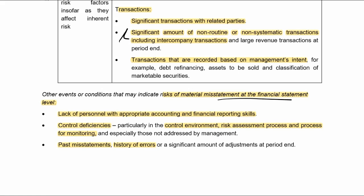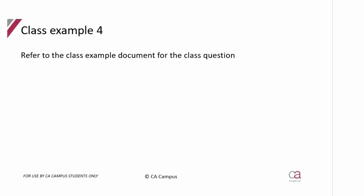Additional risks at the financial statement level include: lack of personnel with appropriate knowledge; control deficiencies in the control environment, risk assessment, or monitoring; or a history of past misstatements and errors. Now let's do the last class question. You've got 4.5 minutes reading time and 22 minutes writing time. This is a very good question to prepare you for what will be expected in answering risk assessment questions.